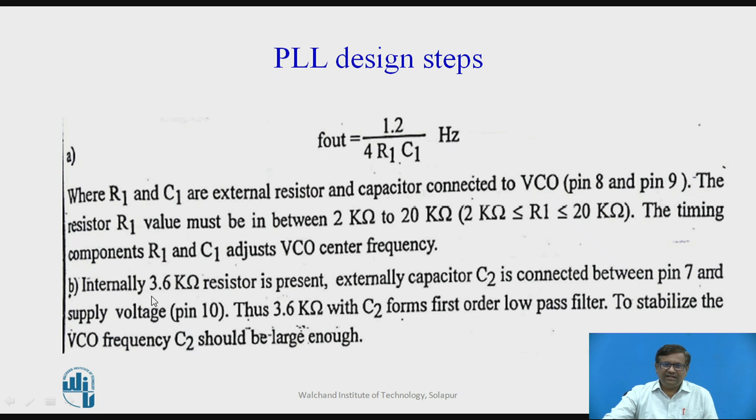As we discussed earlier, internal 3.6 kilo ohm resistor is used for forming a low pass filter in association with external capacitor C2.